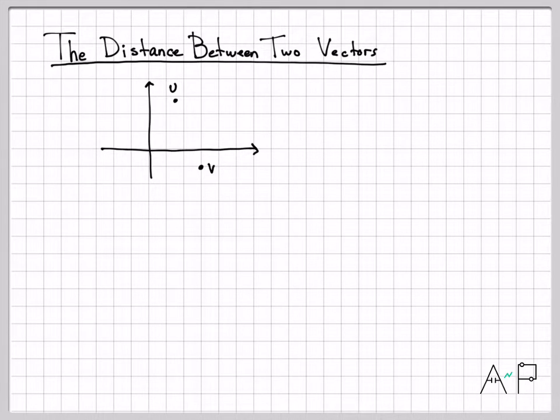There is the vector U, the point U in 2D space. I could have drawn a point from the origin out to V and a point from the origin out to U. That would be the vector representation of those points. I'm just drawing their end points right now.